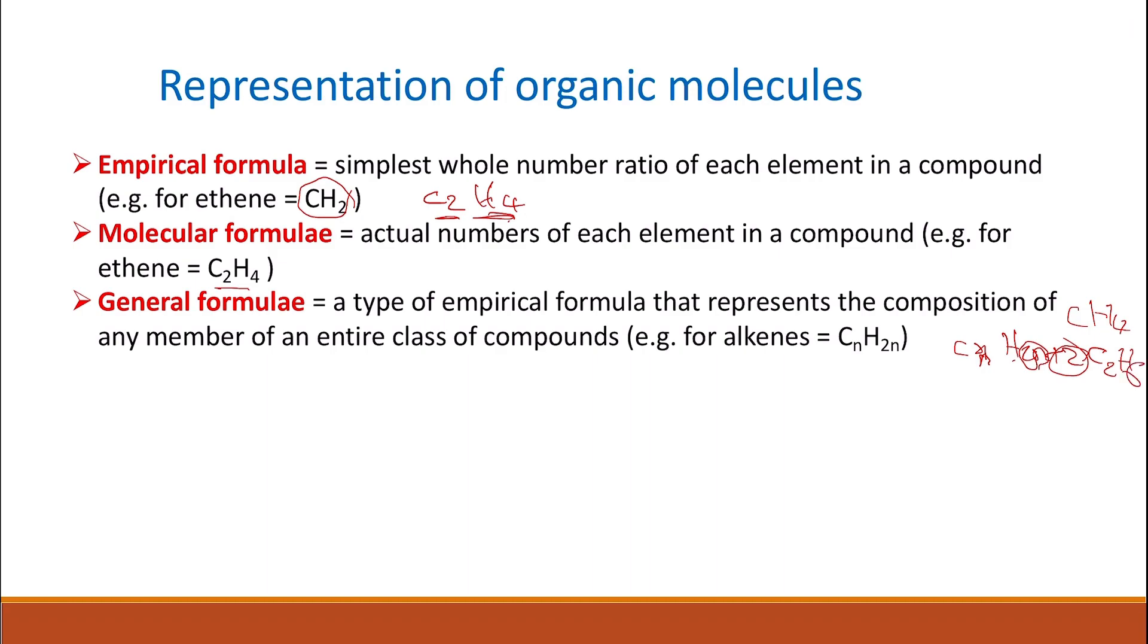Alkenes, on the other hand, have a general formula of CnH2n, which means whatever the number of carbon atoms in your molecule, the number of hydrogen atoms for an alkene will be double that number.